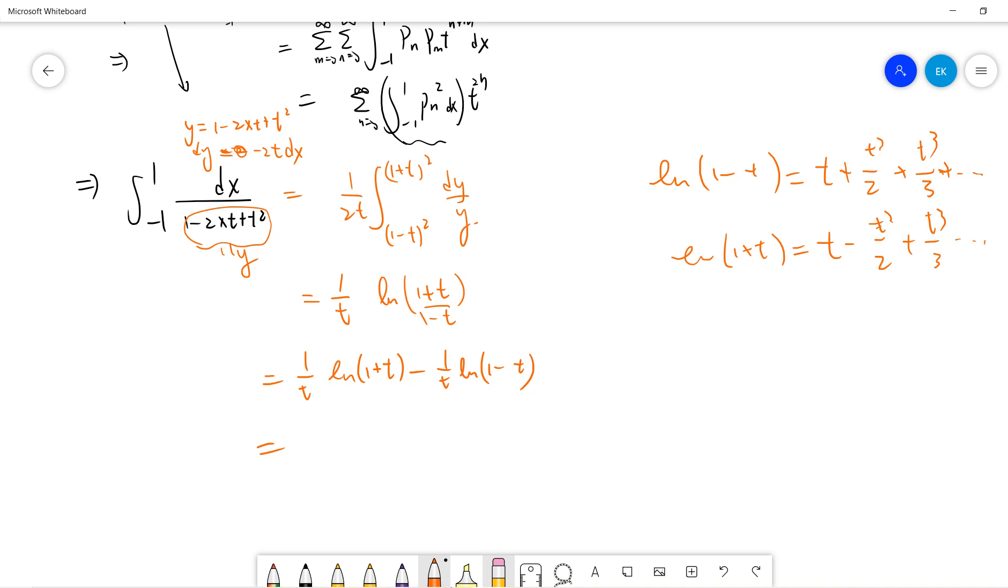So combine all of this, and you will get t to the 2n divided by 2n plus 1. Because only the odd terms survive. Let me check. So if you minus this, then only the even term survive. So you get this.